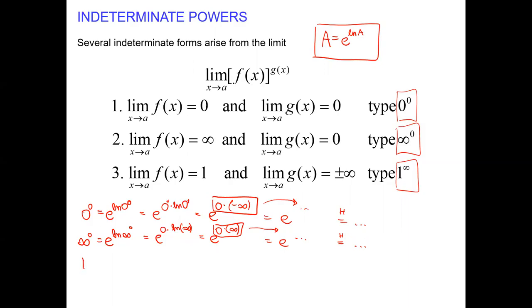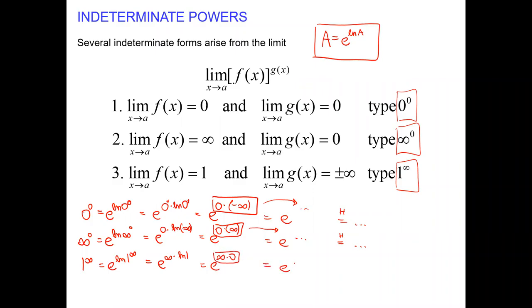Let's do the last one: 1 to the power of infinity. Rewrite as e to the power of ln of 1 to the power of infinity. That infinity as the exponent I can place in front of the logarithmic function. Then ln at 1 is 0 — again we end up with an indeterminate form. We will try to rewrite in terms of the quotient and apply the L'Hôpital rule.